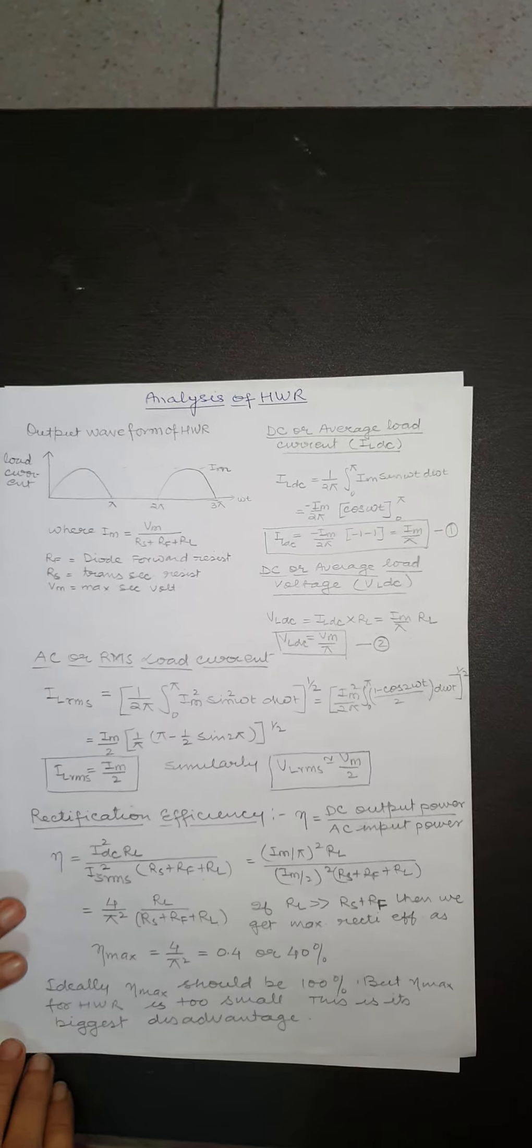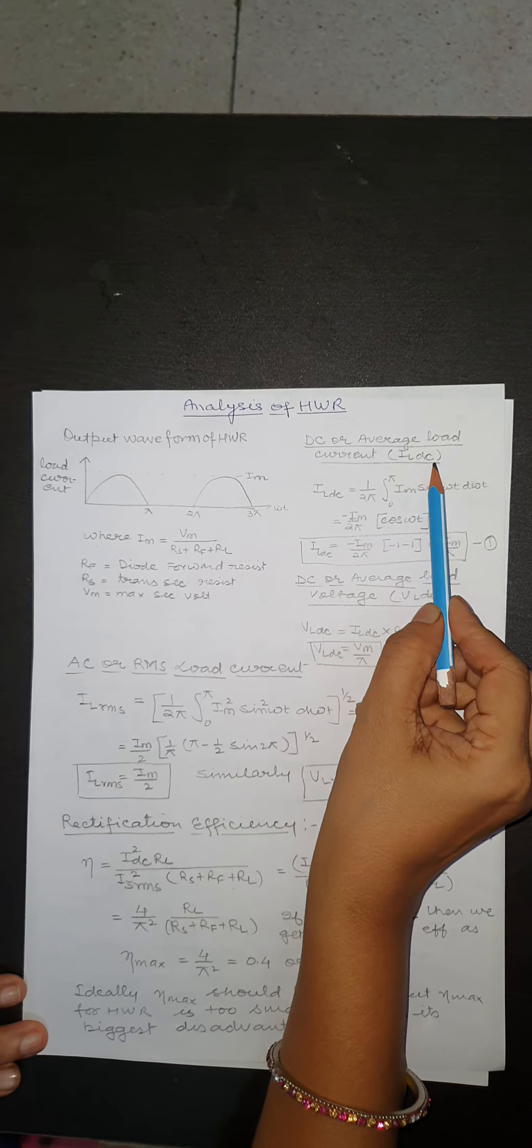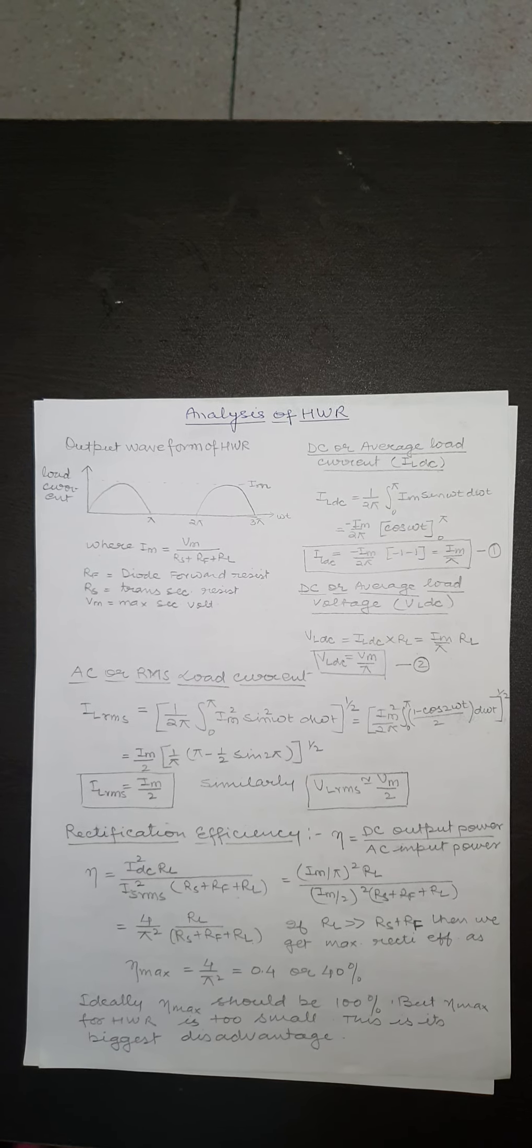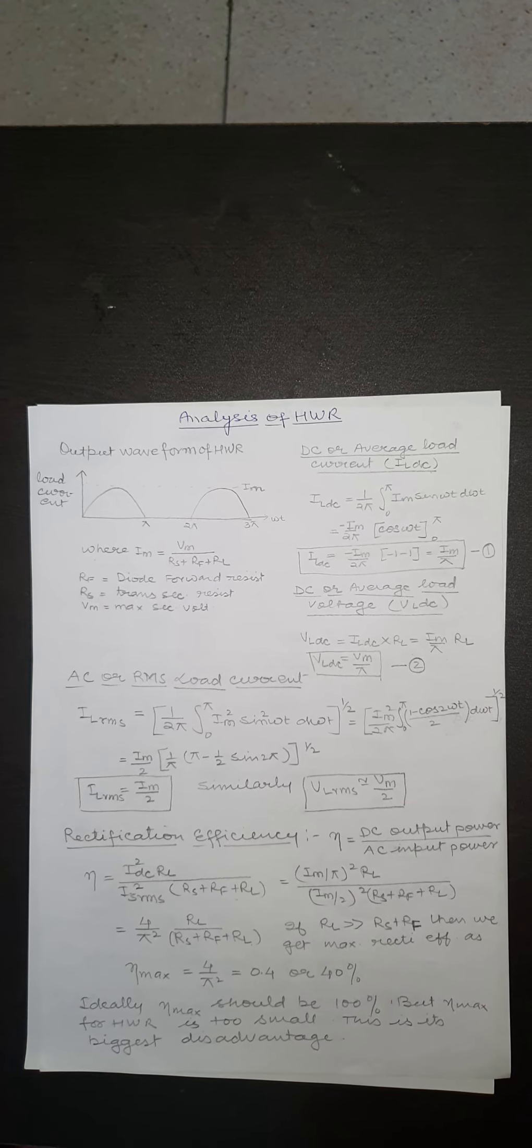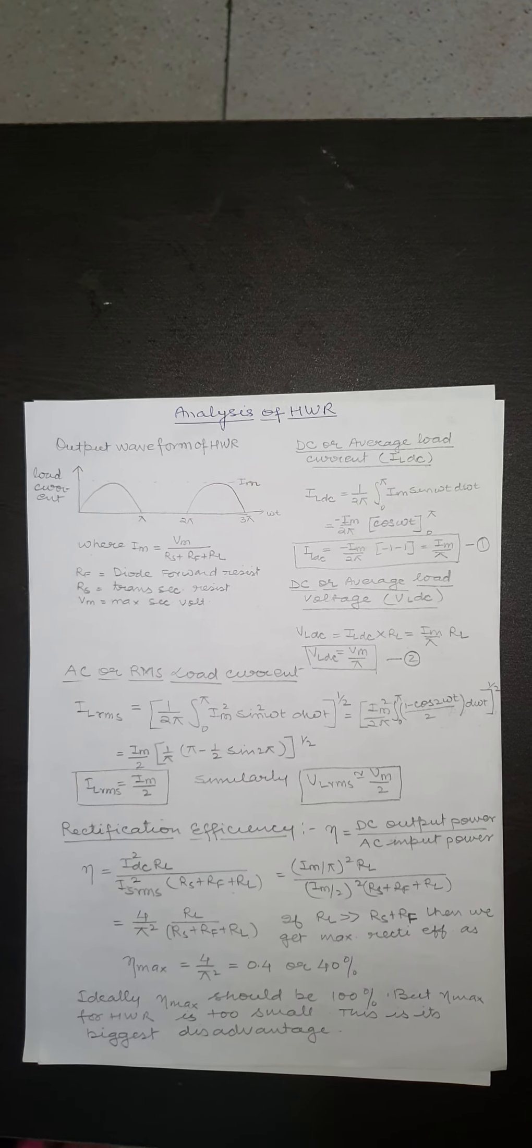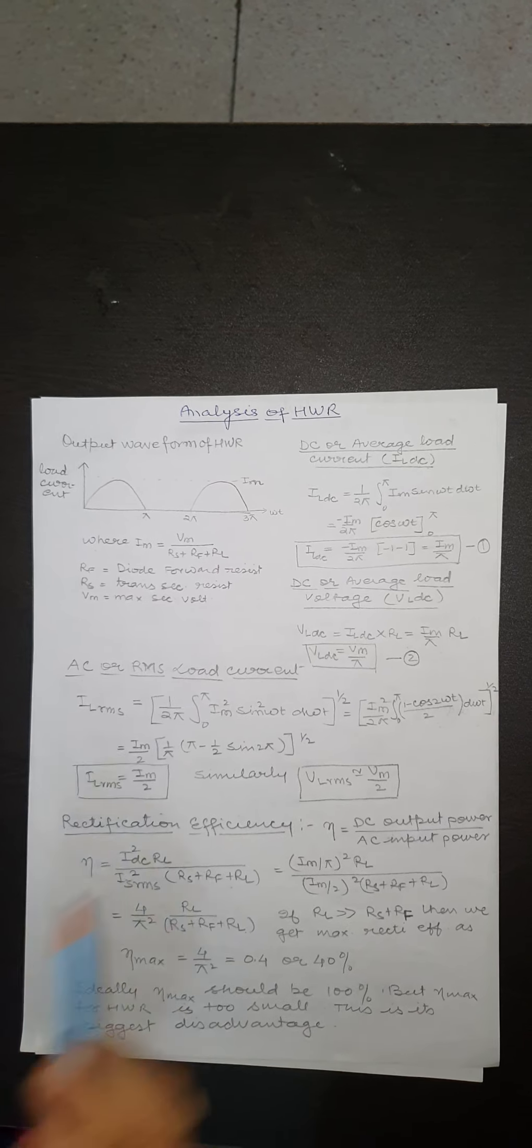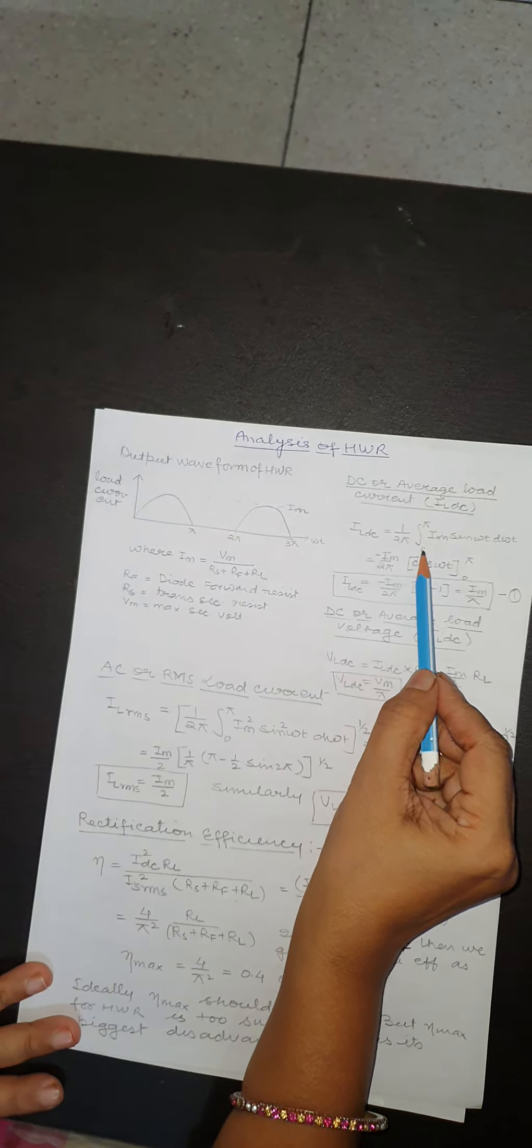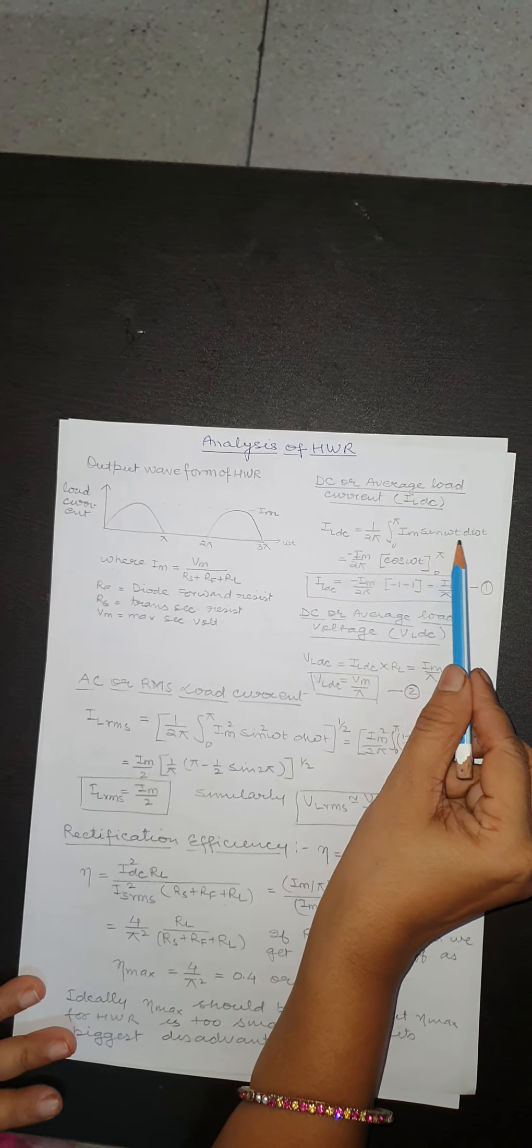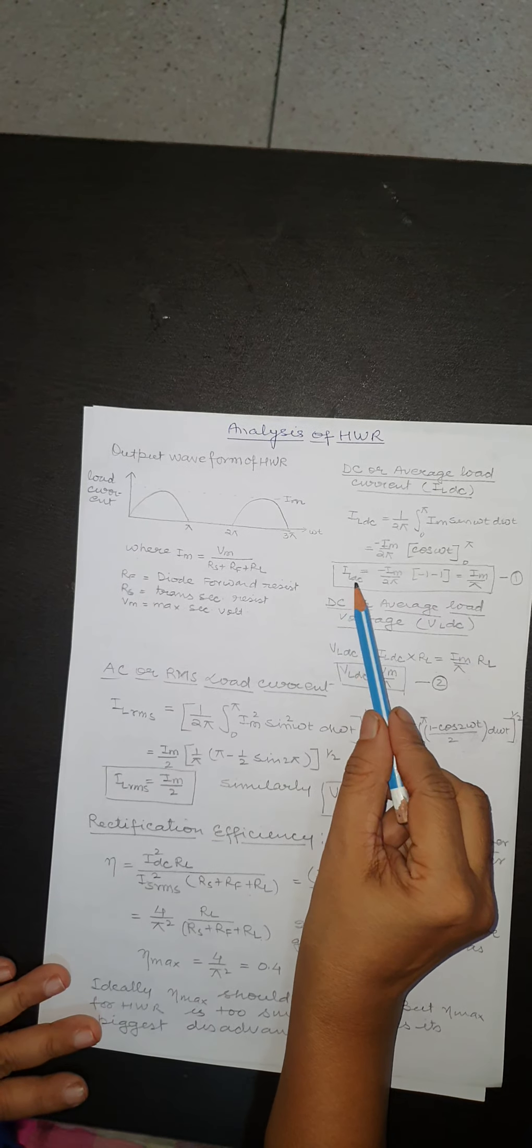First parameter of half-wave rectifier is DC or average load current IL,DC. By definition, the average value of a periodic function is given by the area under one cycle of the function divided by the base or the period. So using this definition, value of IL,DC is given by 1/(2π) times the integral from 0 to π of Im sin(ωt) d(ωt).